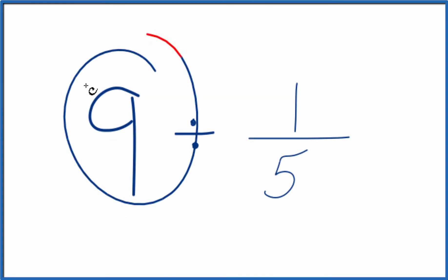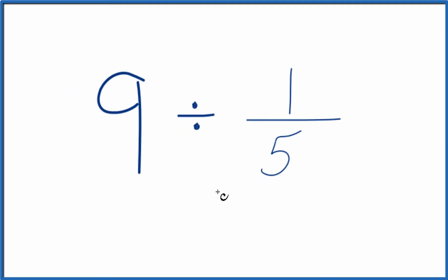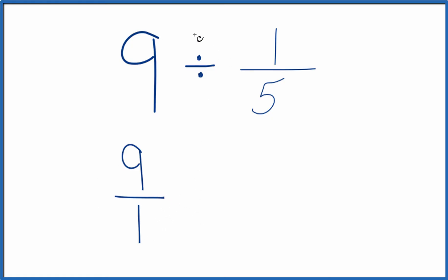Here's how you divide 9 by 1 fifth. The first thing we're going to do, instead of 9, let's call this 9 over 1, because 9 divided by 1 is still 9. Now we have a fraction here. And instead of division, let's multiply by the reciprocal of 1 fifth.